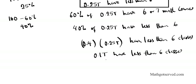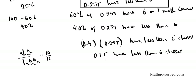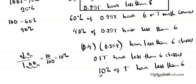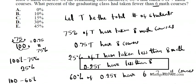40% is 0.4, so we multiply 0.4 times 0.25t. Using the calculator, 0.4 times 0.25 equals 0.1. So 0.1t have fewer than 6 classes. Converting 0.1 to a percentage: 0.1 equals 10 over 100, which is 10%. So 10% of the total graduating class had taken fewer than 6 math courses. The answer is option B.